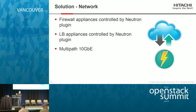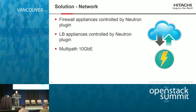For networking: firewall appliances are controlled by a Neutron plugin. Load balancer appliances are controlled by a Neutron plugin, with multi-path 10 gigabit ethernet — all integrated. Storage, compute, networking, everything is integrated into one rack, with networking and compute all integrated into one box.